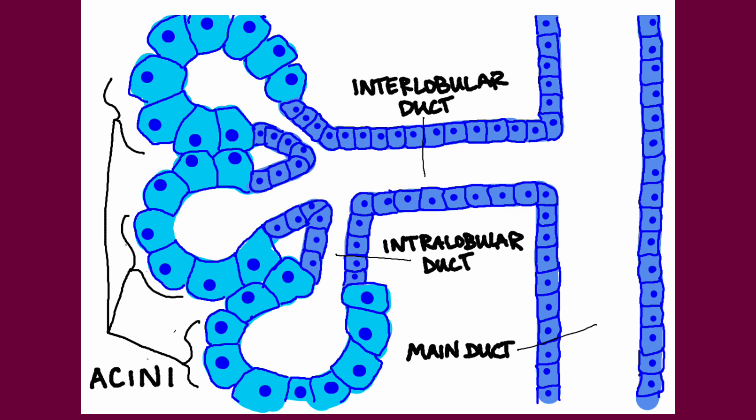The exocrine gland is typically made of many acini arranged in lobules that are surrounded by myoepithelial cells, which push the substances forward into the ductal system. The ducts appear something like a tree, where the acini are the leaves and the smallest branches are the intralobular ducts, which branch off of the interlobular ducts, that branch off the main duct, which is the trunk. Just like tree branches and leaves are arranged in many different sizes and shapes, this also happens in the glands.